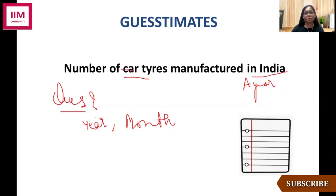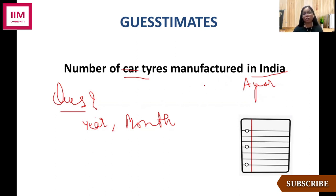For a moment, just assume that maybe 'car' was not given and this was only stated as 'number of tires manufactured.' Then another good question to ask would have been: what sort of tires are you talking about? Basically you need to clarify the questions, because you might end up taking incorrect assumptions or making some random hypothesis that doesn't hold. If I hadn't asked whether it's car tires or which sort of tires, I might end up calculating overall and that would not have been the objective.